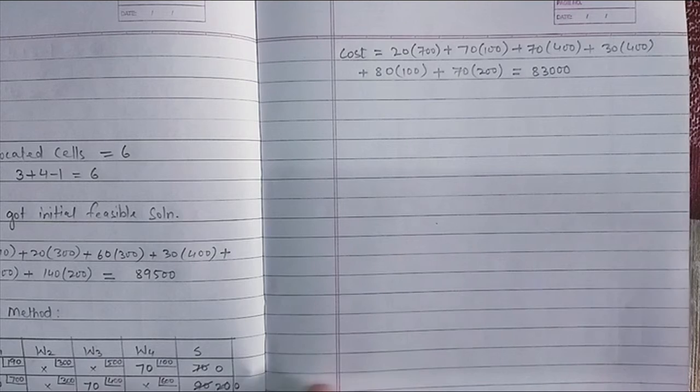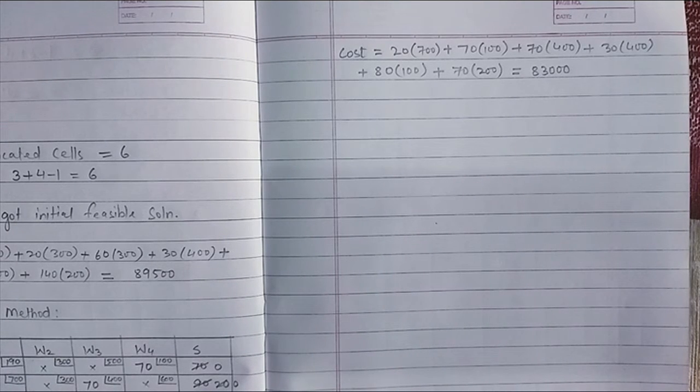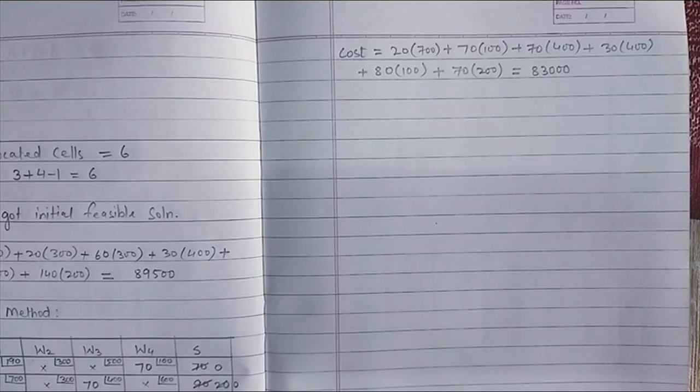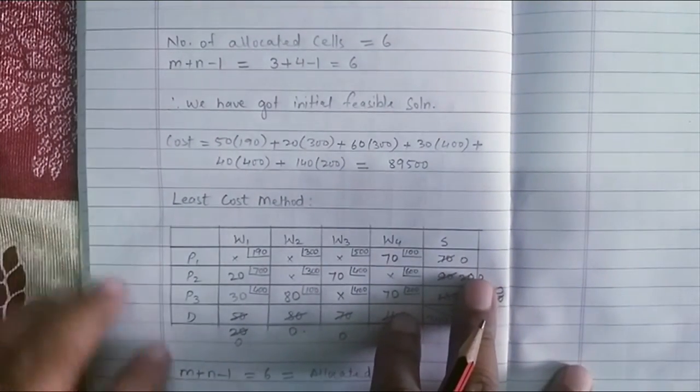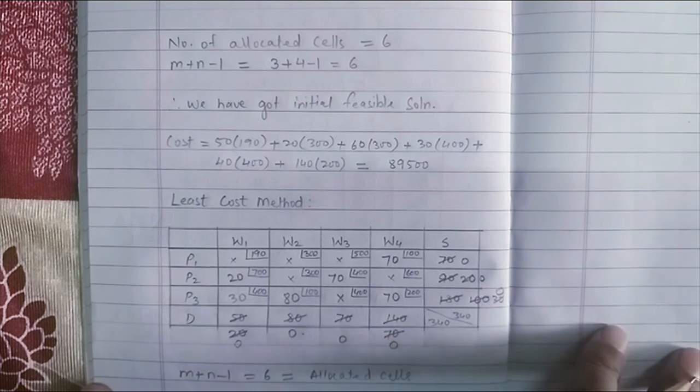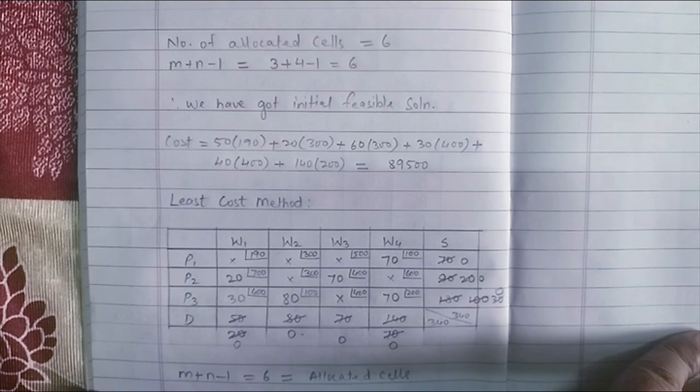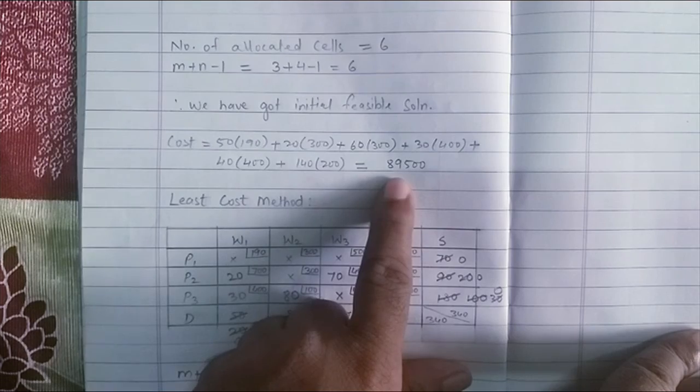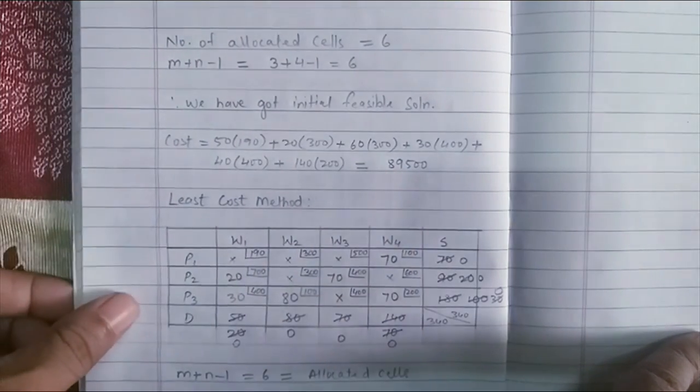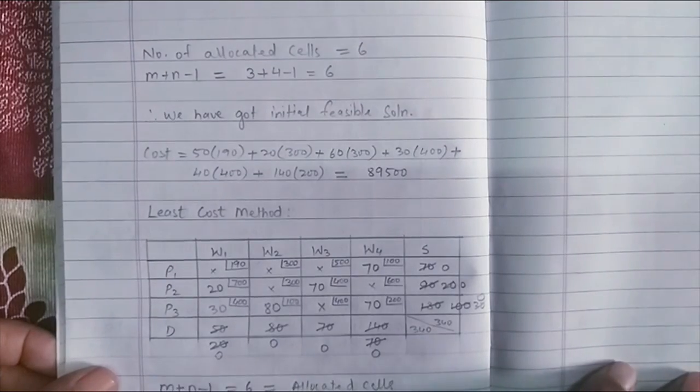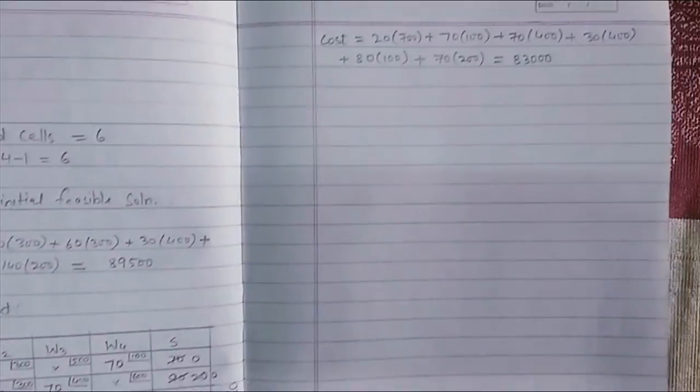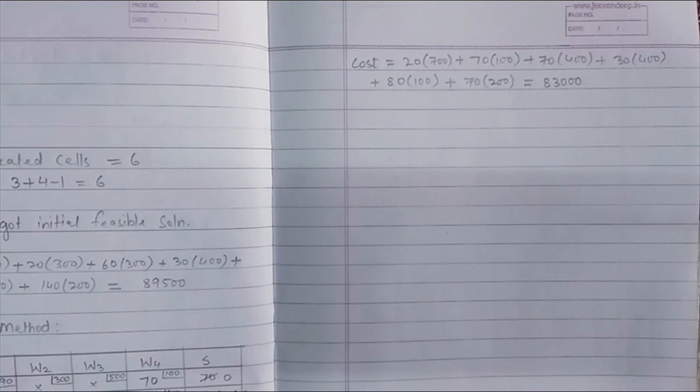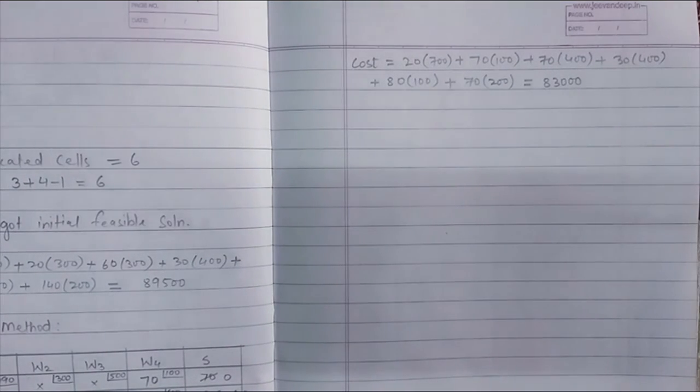So the total cost for this transportation problem in the initial feasible solution using the least cost method is 83,000 and if you remember if I had used the other method that is your north west corner even though it was a initial feasible solution the cost was at a higher end which is 89,500. Both are feasible solutions but they are not the optimum solution.